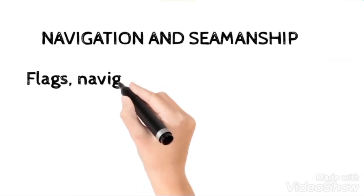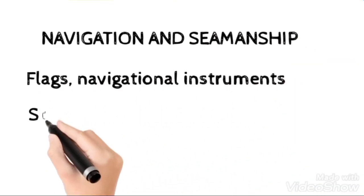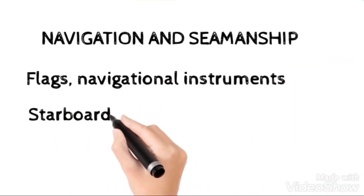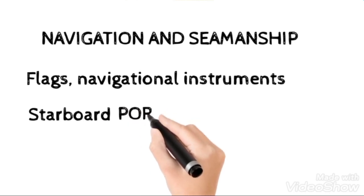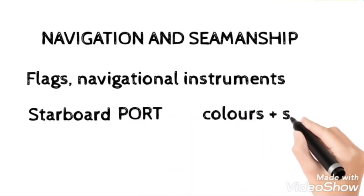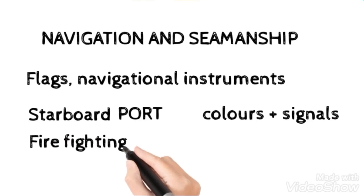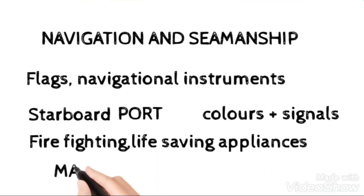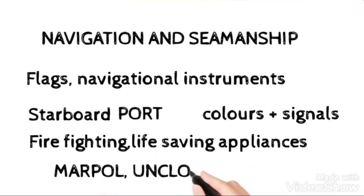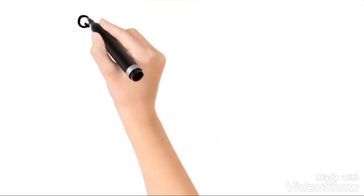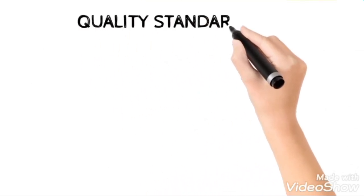In the engineering department, we have the Navigation and Seamanship. You should be covered with the A to Z flags, and then navigational instruments, and to be clear with the colors and signals of starboard and port side, firefighting and port side firefighting applications, and then international agreements like UNCLOS and Marpol.